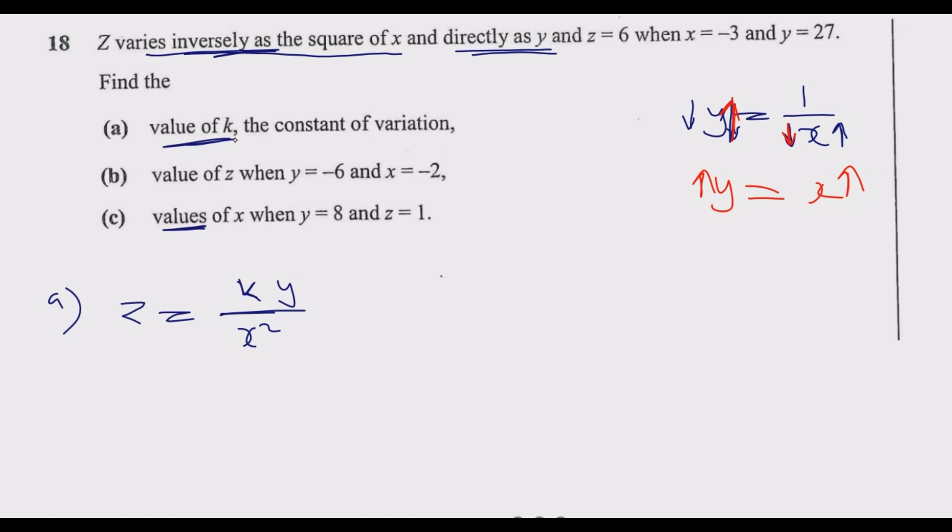We are told that z is 6 when x equals negative 3 and y equals 27. So we can substitute: z equals 6, y equals 27, and x equals negative 3.